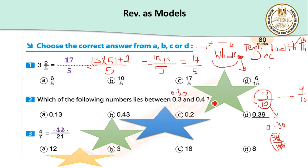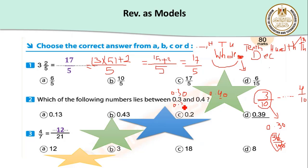Then between thirty-hundredths and forty-hundredths, what number lies between both of them? You can write 0.31, 0.32, 0.33, and so on.